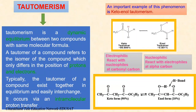Ethyl acetoacetate exists as a tautomeric mixture of keto and enol forms. It contains two functional groups: one is a ketone and the other is an ester. These functional groups are separated by a methylene group. Those methylene hydrogens are slightly acidic in nature. They are loosely bound to the molecule and move toward the functional groups, exhibiting keto-enol tautomerism. Ethyl acetoacetate exists 90% in keto form and only 10% in enol form.